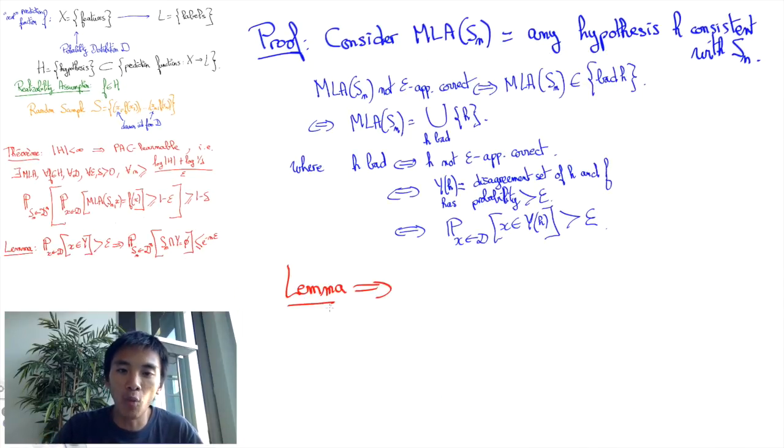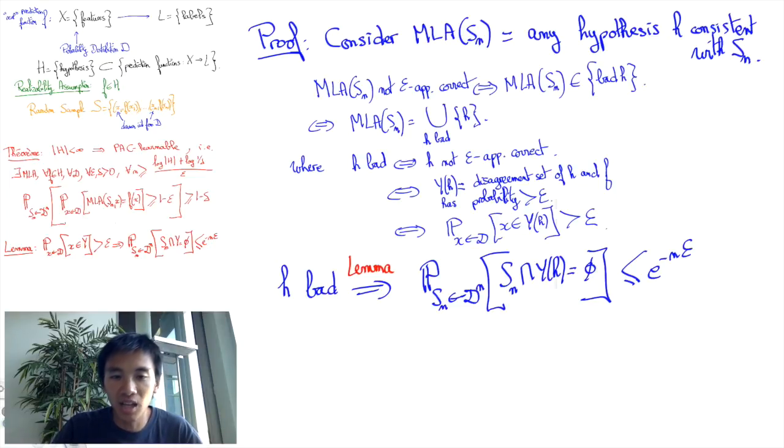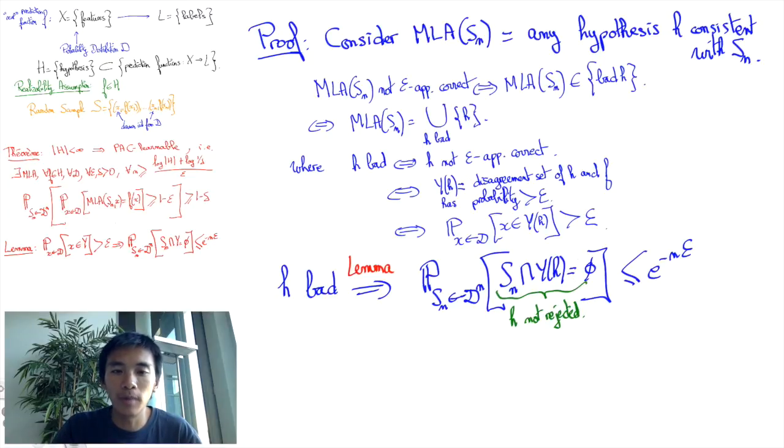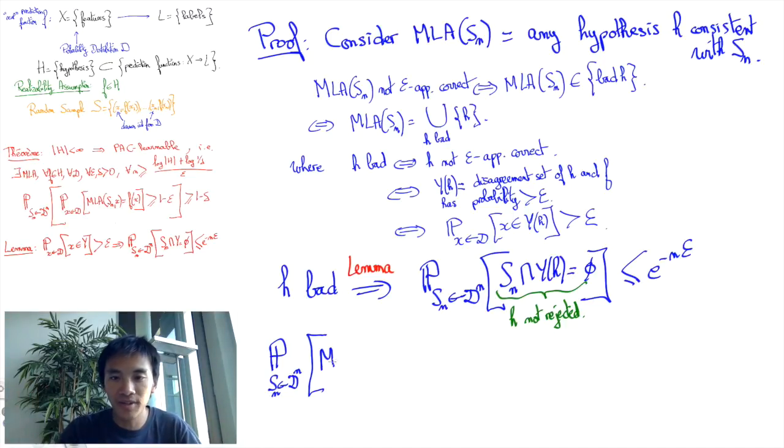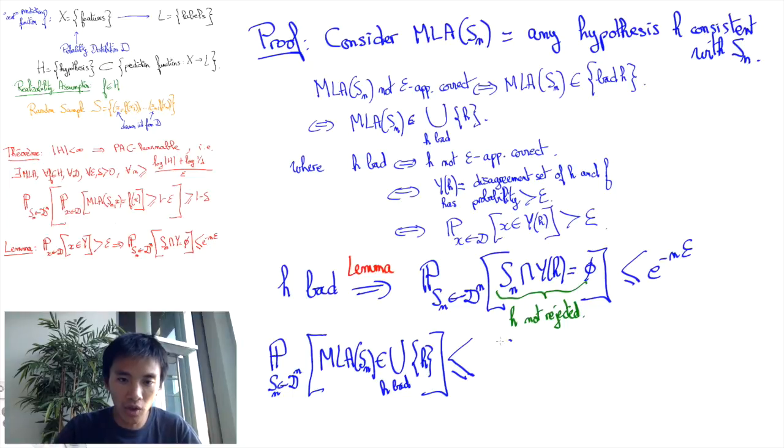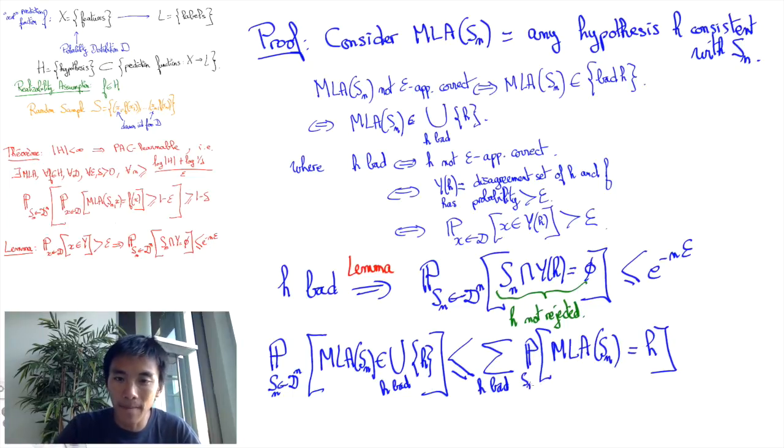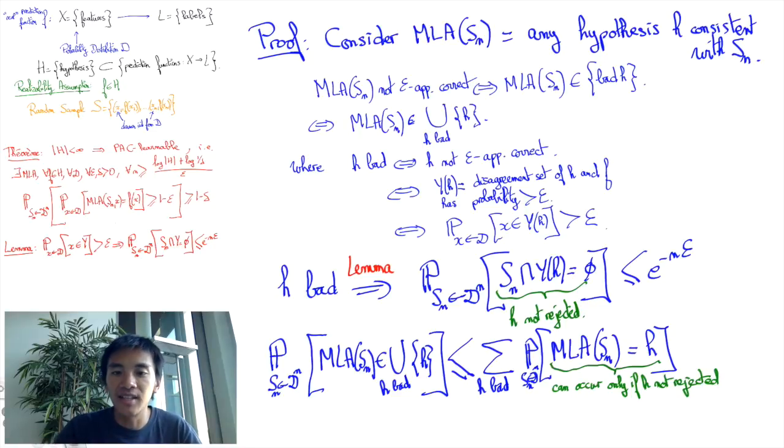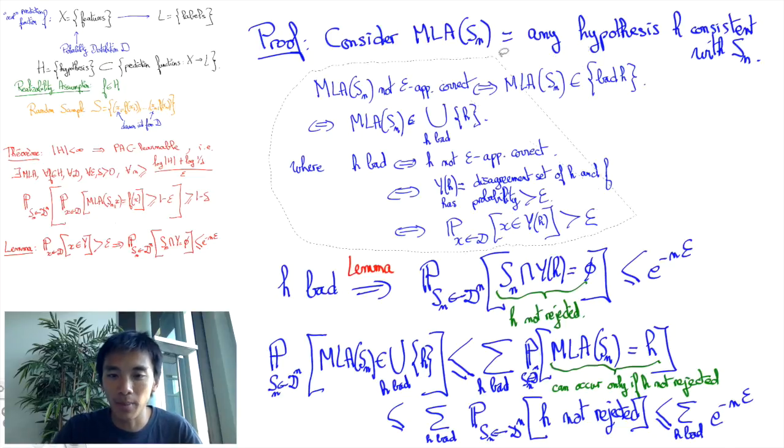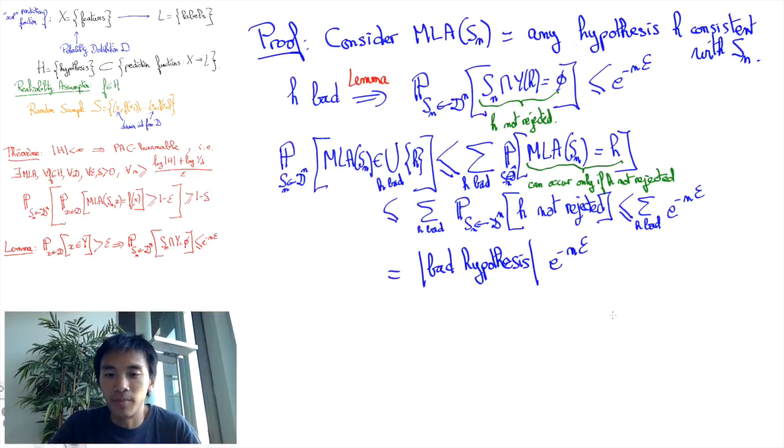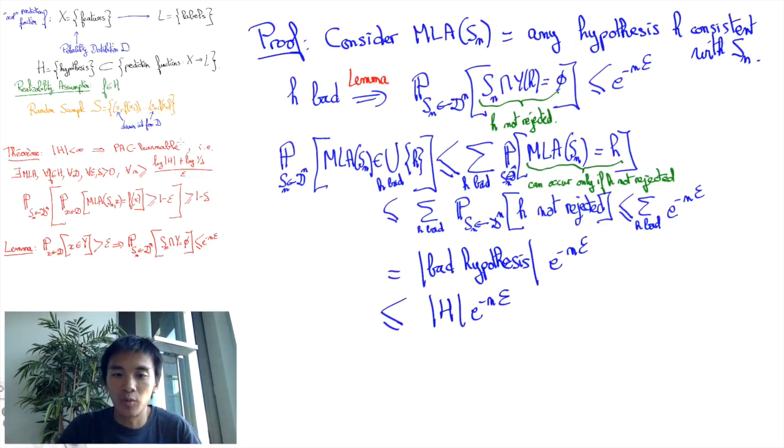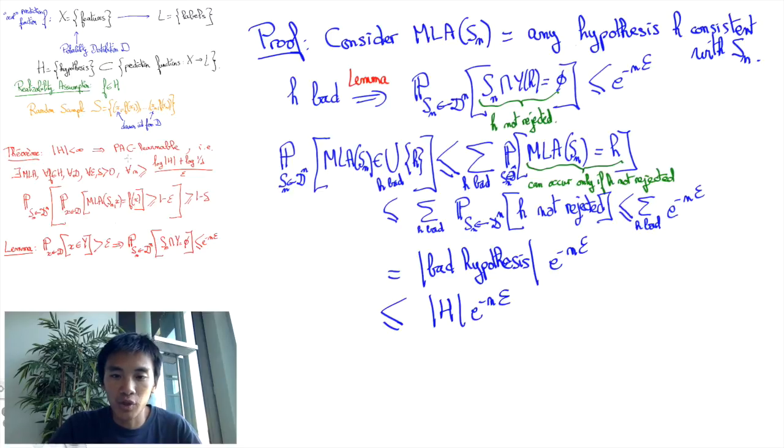Applying the lemma for Y tells us that the probability that a bad hypothesis h is not rejected is at most e to the power minus n epsilon. We now take the union bounds over all non-rejection of bad hypotheses. This leads us to the conclusion that the probability that some bad hypothesis is not rejected is at most e to the power minus n epsilon times the number of such bad hypotheses. And the number of such bad hypotheses is clearly bounded by the number of hypotheses we started with. This gives us a right-hand side equal to the cardinal of H times e to the minus n epsilon.